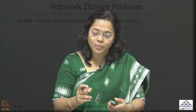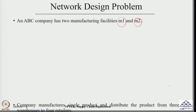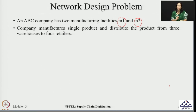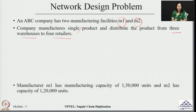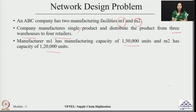Let us refer to a simple example. Suppose a company has two manufacturing facilities M1 and M2, manufacturing a single product to be distributed through three warehouses, which then supply four retailers. To reiterate: two manufacturers, three warehouses, four retailers, and one product. Manufacturer M1 has a capacity of 1,50,000 units and M2 has a capacity of 1,20,000 units.